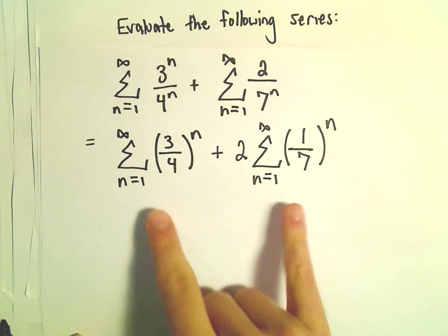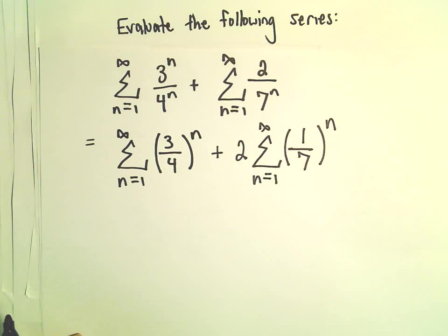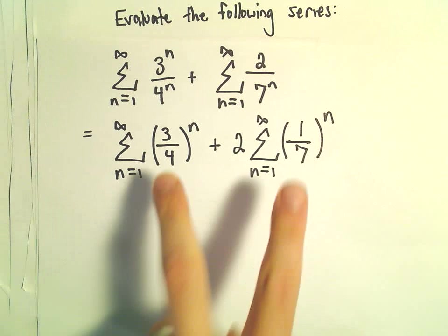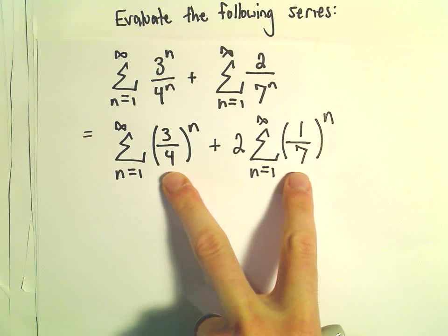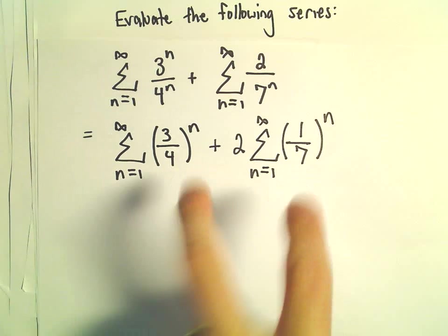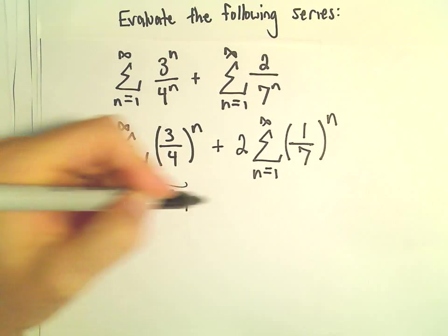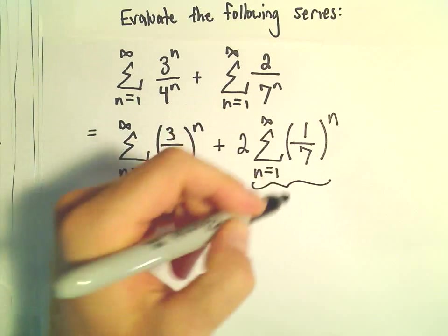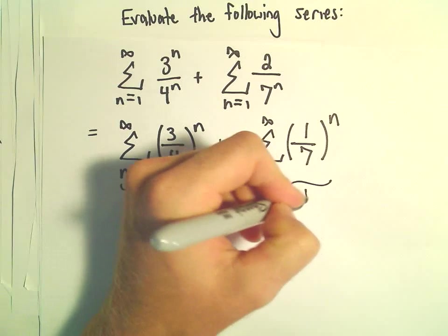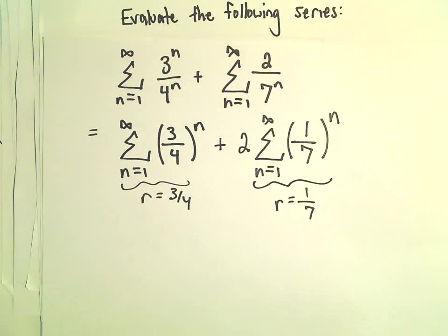So now I'm taking the original formula and just breaking it up into two separate geometric series. And again, both of these are convergent because the r values are between positive 1 and negative 1. So here we've got an r value of 3 over 4. For this series, we've got an r value of 1 seventh for this geometric series.